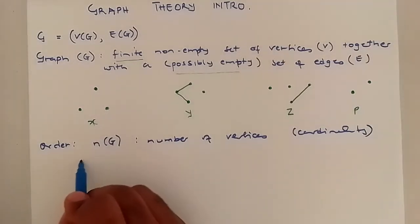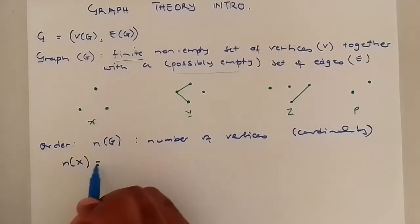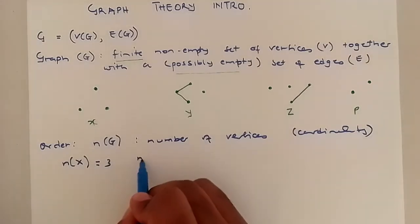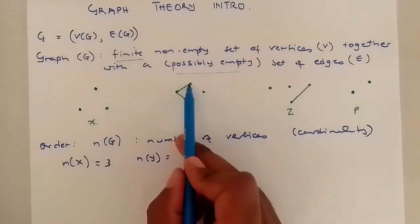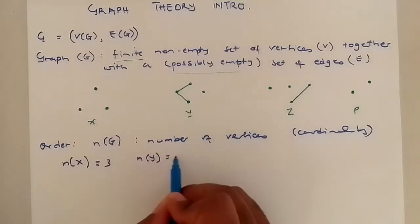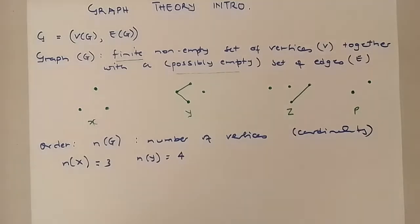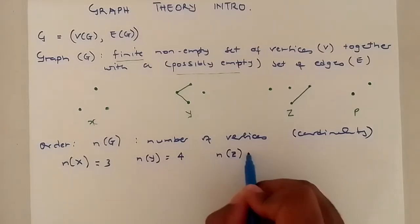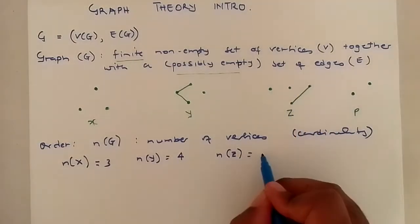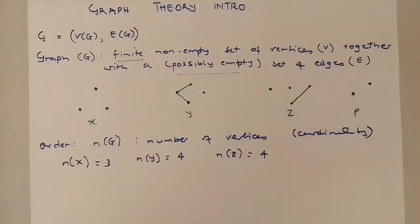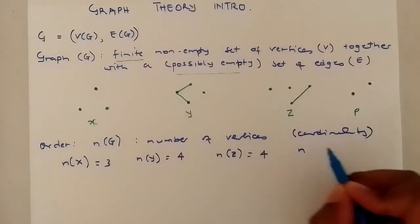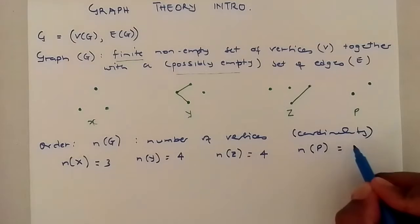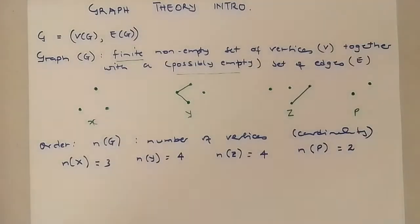Let's look at the graphs we have here. Graph X: the order of X is 3 — X has 3 vertices. The order of Y is 4 — Y has 4 vertices. The order of Z is 4 — Z has 4 vertices. Looking at graph P: P has 2 vertices, so N of P equals 2.